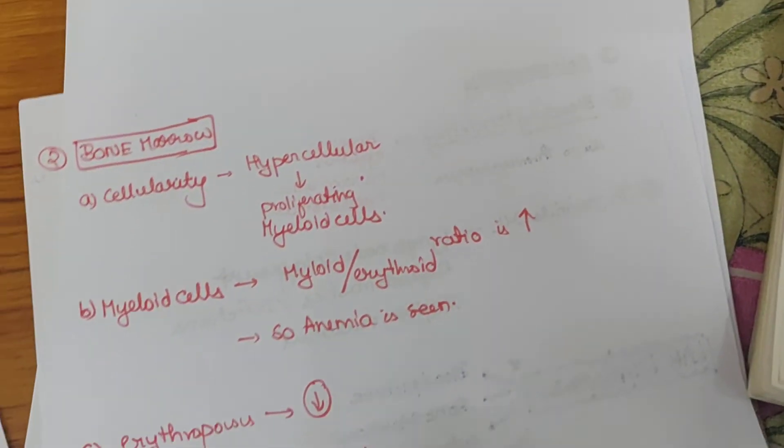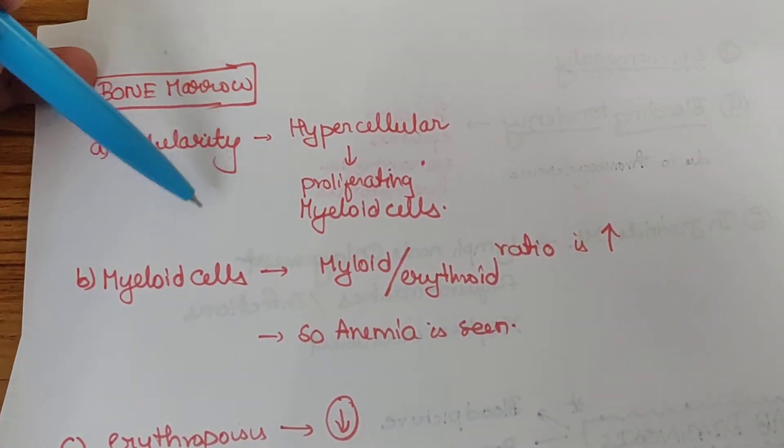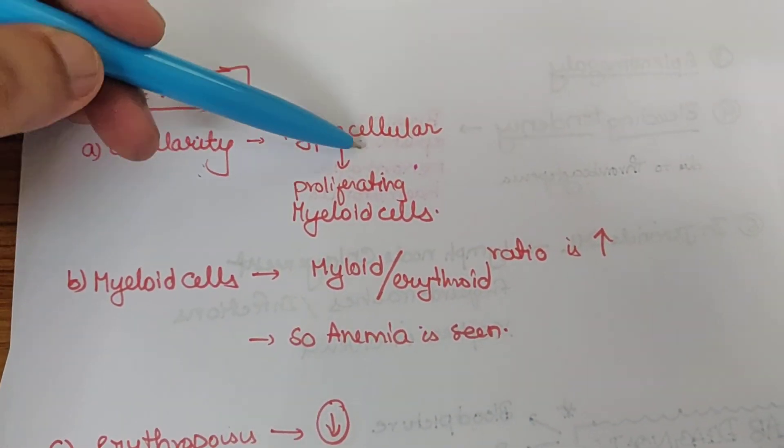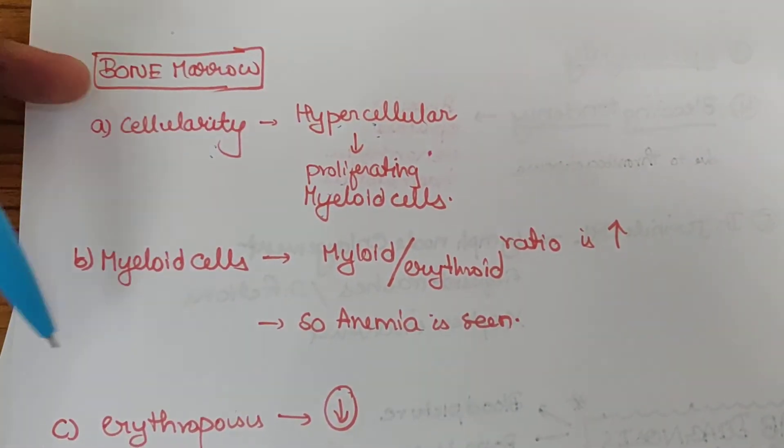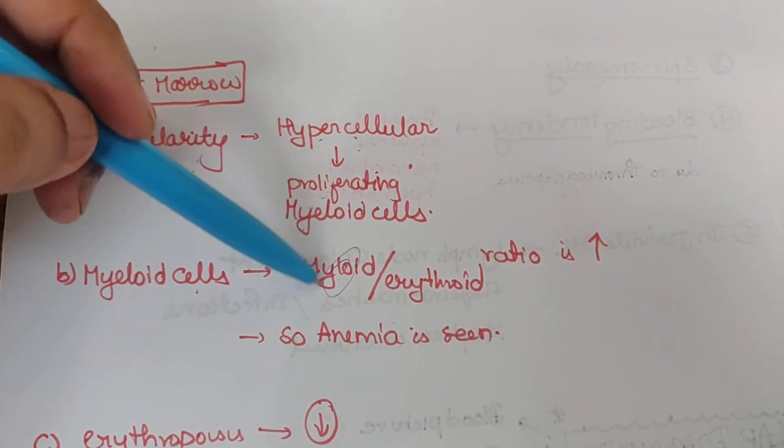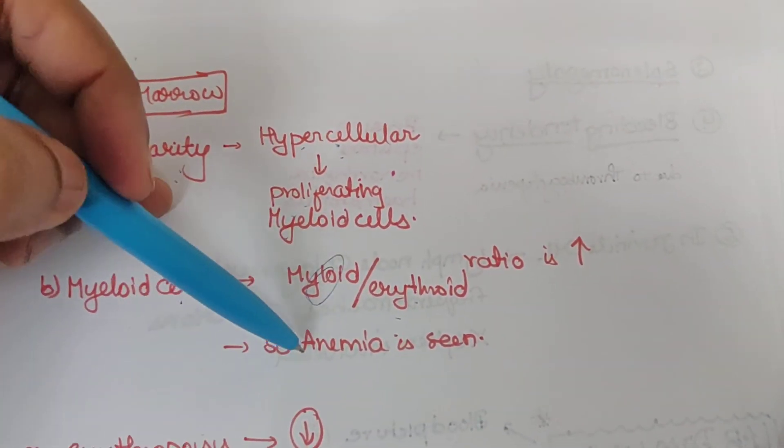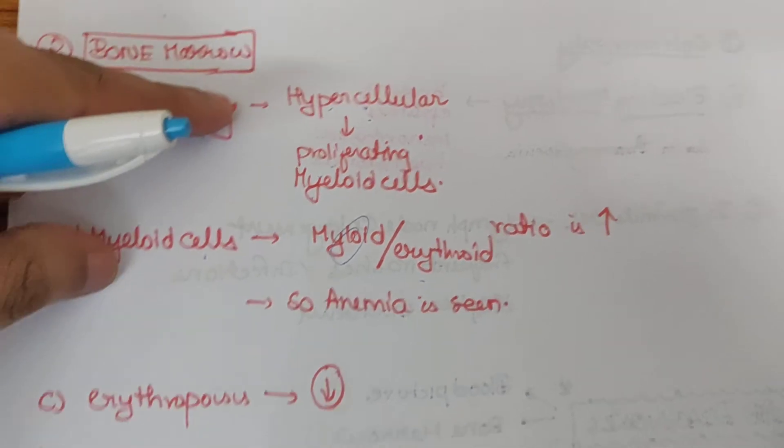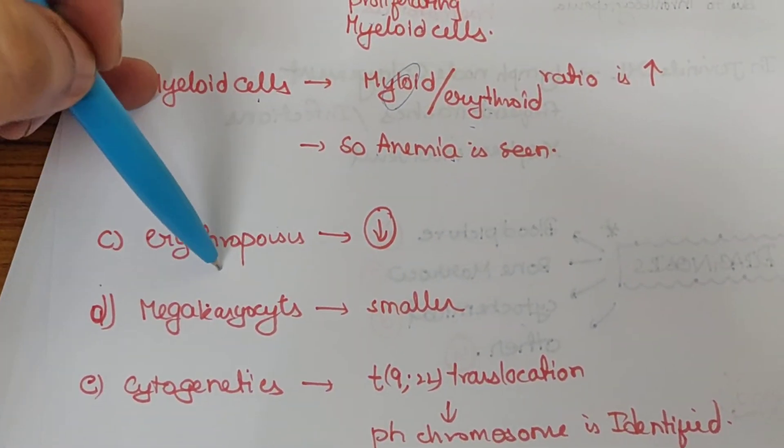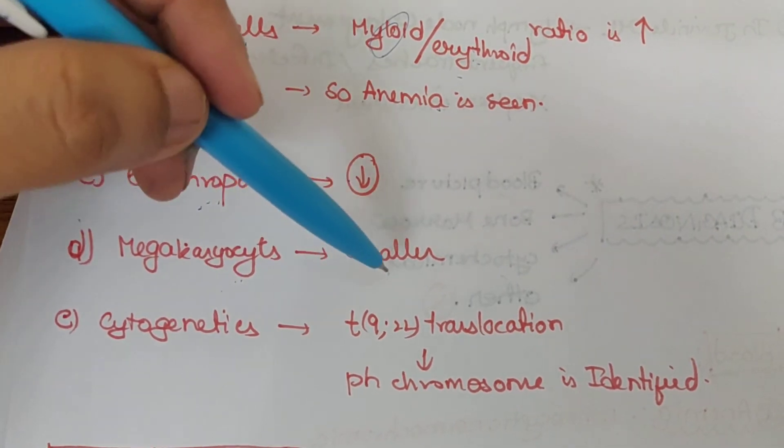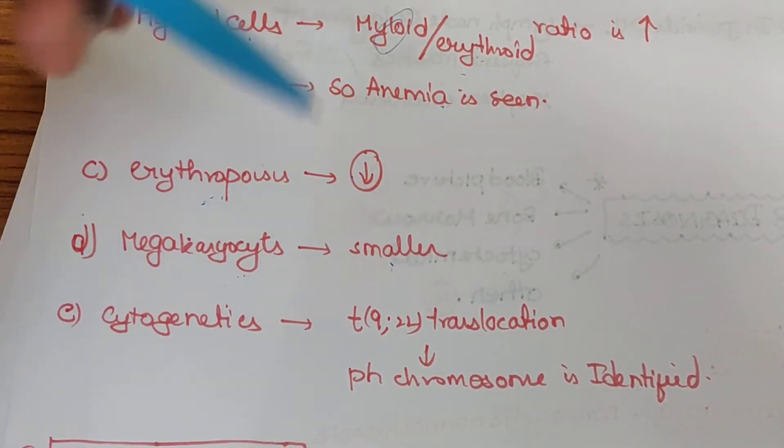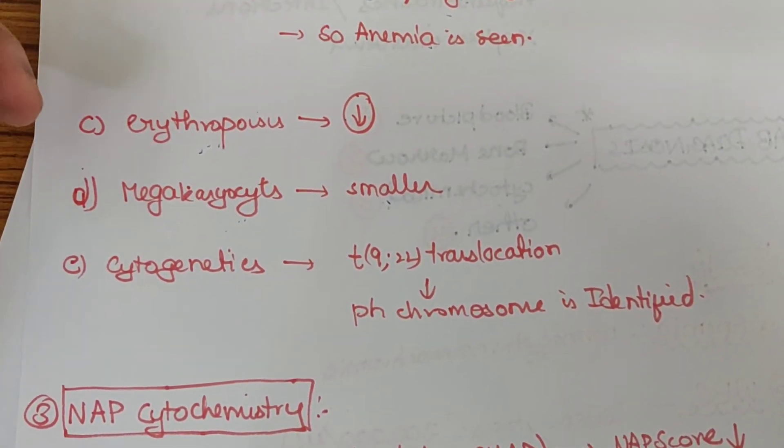In bone marrow we see hypercellular marrow due to proliferating myeloid cells, with increased myeloid to erythroid ratio. Anemia occurs due to low erythropoiesis in the bone marrow. Megakaryocytes are generally smaller, leading to less thrombocytes and bleeding tendencies.